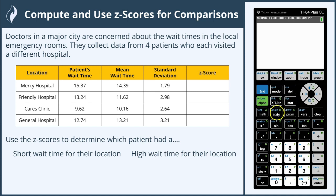First, we have to find the Z-scores. For finding a Z-score, I'm going to write this down here in the corner. Our Z-score formula is Z equals our X-value minus the mean — I'm going to write mu — over the standard deviation for that hospital, which is our sigma.